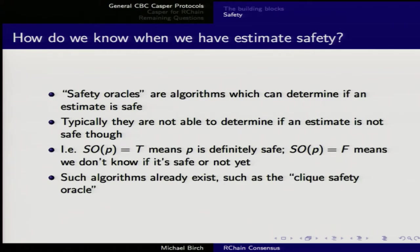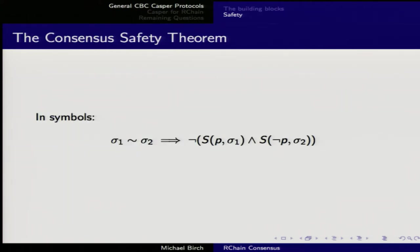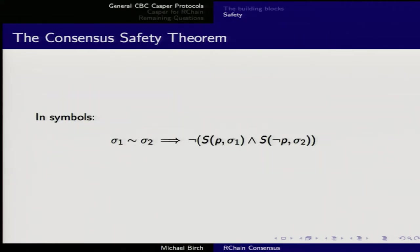Estimate safety implies consensus safety over all protocol states that share a common future, so individual nodes can individually come to the realization that this is what the network is going to reach consensus on. There's a notation question on the slide — if Sigma 2 is a future of Sigma 1, then it's not the case that P is safe in Sigma 1 and something other than P is safe in Sigma 2. The symbols may have gotten mixed up, or P is a proposition about the thing.